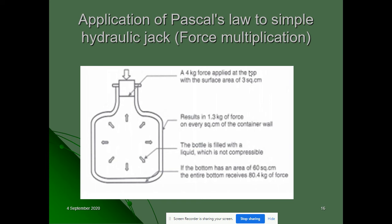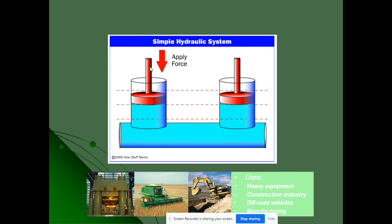Here is an example with a hydraulic jack. A force of 4 kg is applied at the top with a surface area of 3 square centimeters. As a result, around 1.3 kg of force acts on every square centimeter of area. If the entire inner bottom surface area is about 60 square centimeters, then the total force received at the bottom is 80.4 kg. So you can see the conversion from 4 kg input to 80 kg output — a very high force multiplication that works purely on Pascal's law.